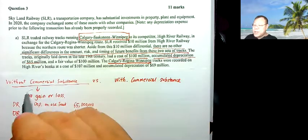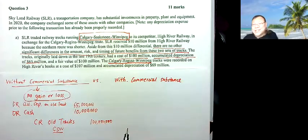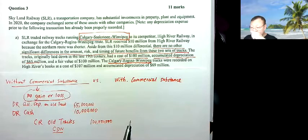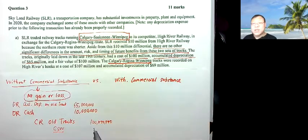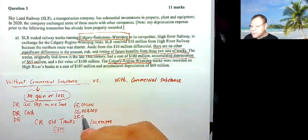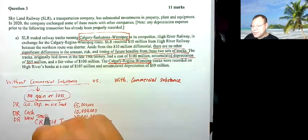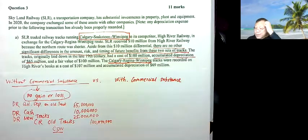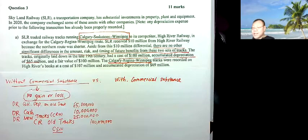Remember, there's no gain or loss because this is not a commercial substance transaction. So there's no gain or loss account to debit or credit. If you add up the debits so far, that's $75 million debit, but the credit is $100 million. So you need an additional $25 million debit — and that will be our new track, the CRW, Calgary-Regina-Winnipeg. That's the journal entry for Part A.